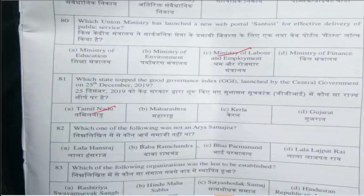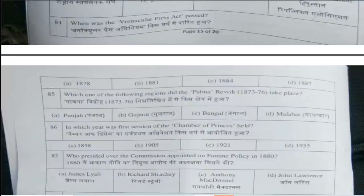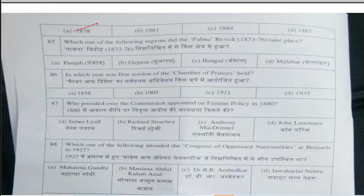Question number 80: Which Union Ministry has launched a new web portal for effective delivery of public services? Answer is option C, Ministry of Labour and Employment. Question number 81: Which state topped the Good Governance Index launched by the central government on 25th December 2019? Answer is option A, Tamil Nadu. Question number 82: Which one of the following was not a Kisan Sabhaist? Answer is option B, Baba Ramchandra.